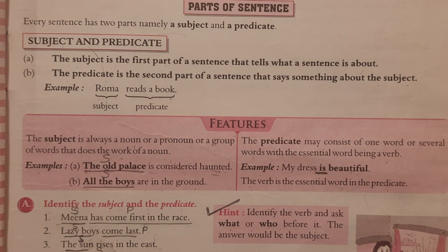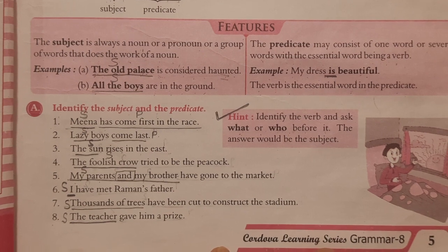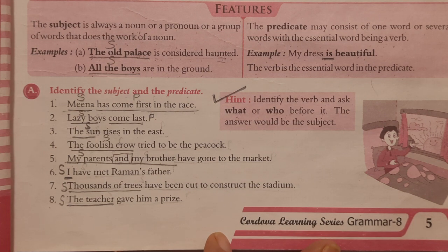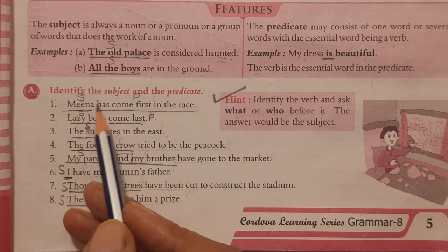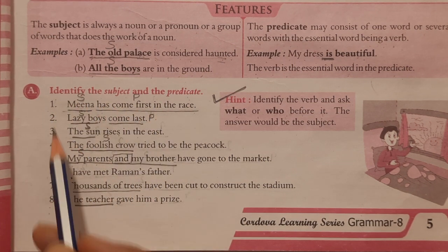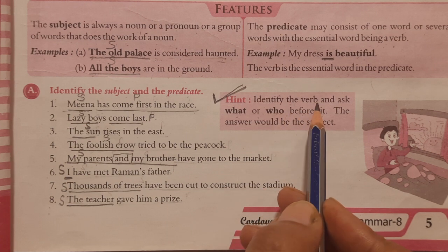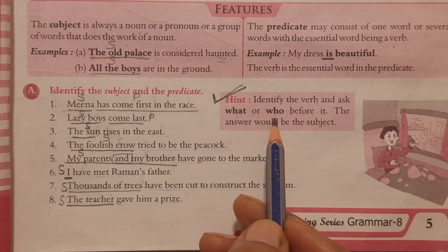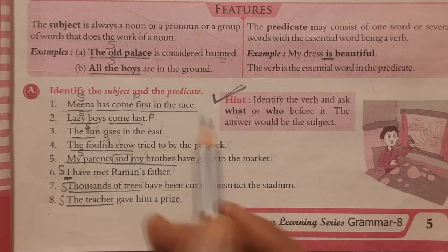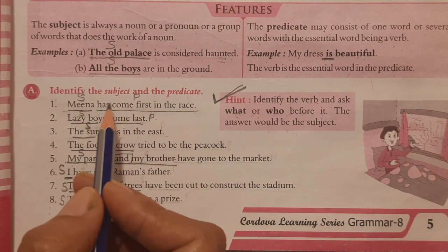Now, in a sentence, how do you find the subject? Sometimes subjects can be confusing — they are very long and some students get confused about which part is the subject. Here is a simple hint to identify the subject and predicate: identify the verb in a sentence and then ask 'what' or 'who' before it. The answer will always be the subject. Let's practice this with an exercise.